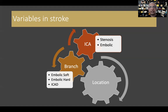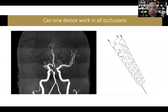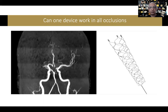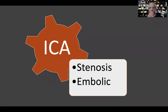One single device like a stent retriever may not have an answer for every type of occlusion. We have to identify the underlying cause and customize our treatment towards it, and then the chances of recanalization will be much higher than blindly trying one technique for every single occlusion. Let's start with the internal carotid artery.